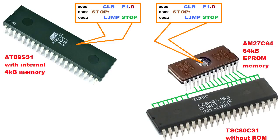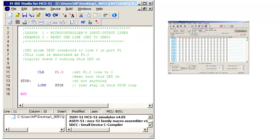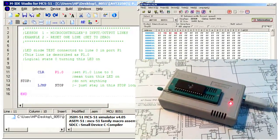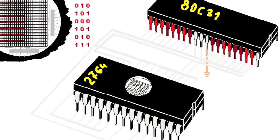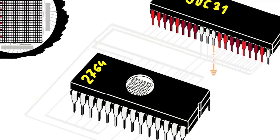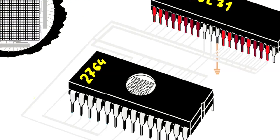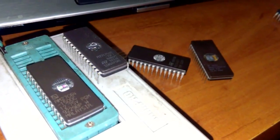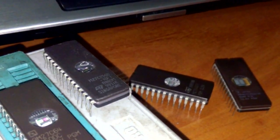The program contained in the external program memory is not different from the one that would be in internal memory. The simplest code from episode 4 could be saved to the EPROM memory via memory programmer. The ADC31 processor has no internal program memory, so using EPROM 27C64 is necessary. Of course, you can use a different memory capacity, but 27C64 is what I have at hand.